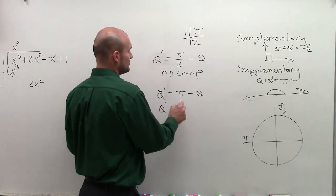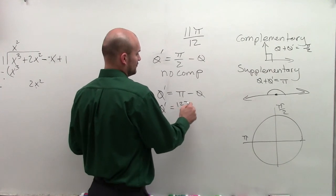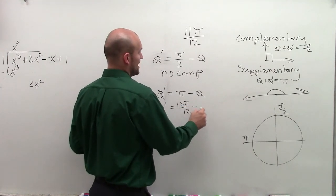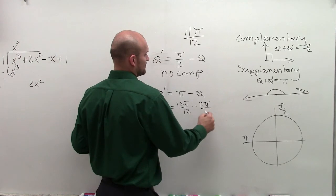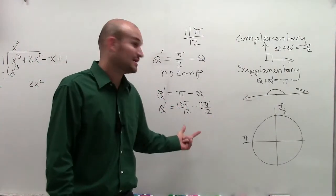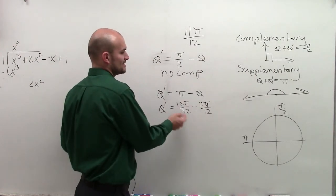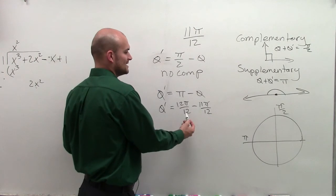So theta prime equals pi, which is going to be, in this case, 12 pi over 12 minus 11 pi over 12. Now, why did I change pi to 12 pi over 12? Well, because I know when subtracting fractions, I've got to have the same denominator. So I automatically just change that to 12 over 12, so they can have the same denominator.